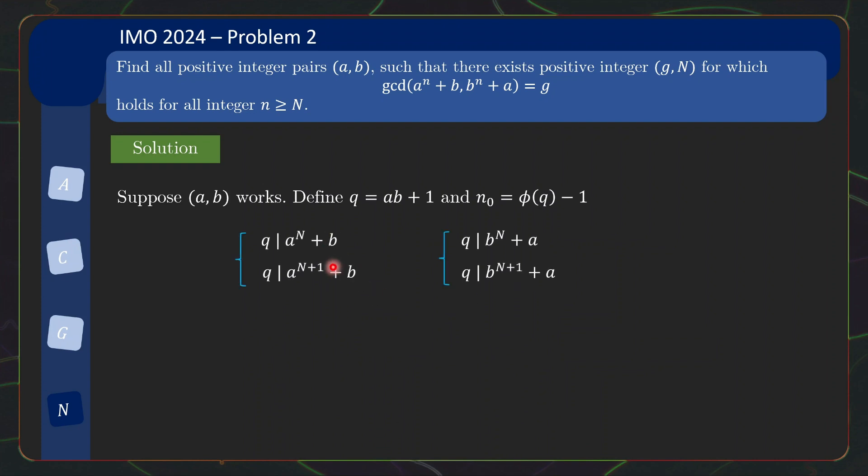And putting these two together, we see that we can take the difference, q divides the difference, which is a^n times (a - 1), which means, because a and q are coprime, so q divides a - 1. This means a ≡ 1 mod q. The same argument over here gives us b ≡ 1 mod q.